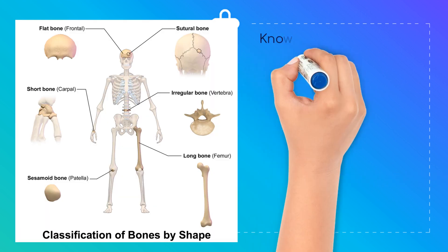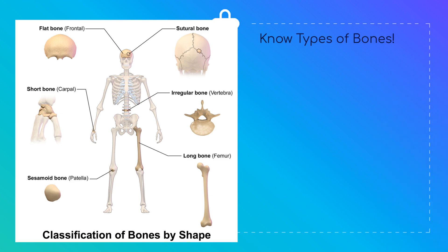In order to answer this question, it is good to know the different types of bones. There are flat bones, short bones, sesamoid bones, long bones, sutural bones, and irregular bones.